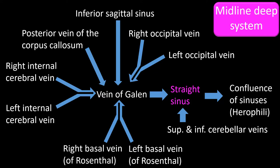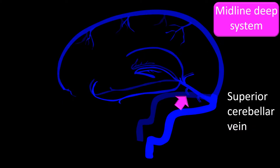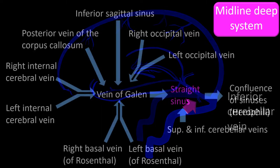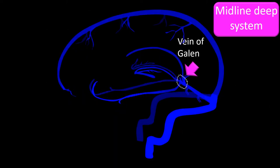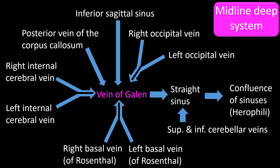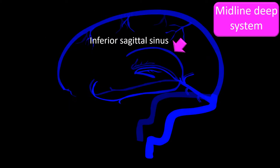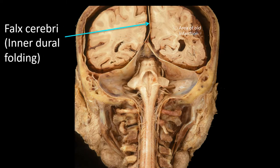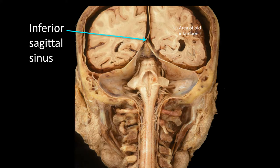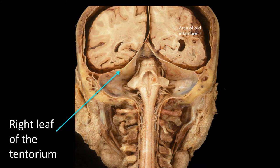The straight sinus is also fed by the vein of Galen. The vein of Galen is fed by the inferior sagittal sinus. Notice that the dual inner dura that forms the falx cerebri splits to form the inferior sagittal sinus before forming the tentorium.